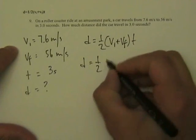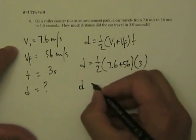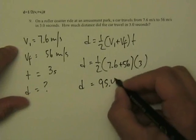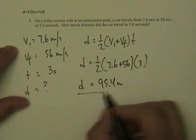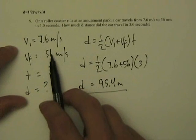So that's one-half, 7.6, 56 for 3 seconds, which ends up equaling 95.4 meters. That's how far you go changing from 7.6 to 56 meters per second.